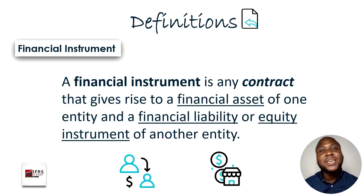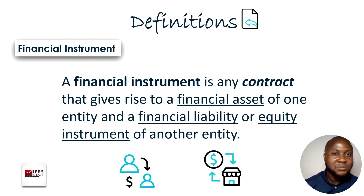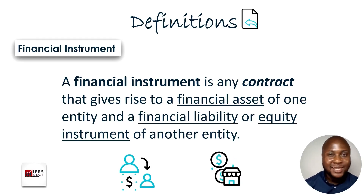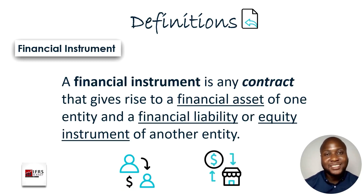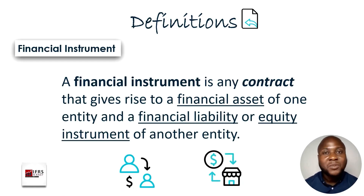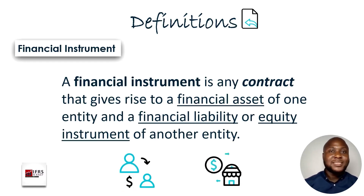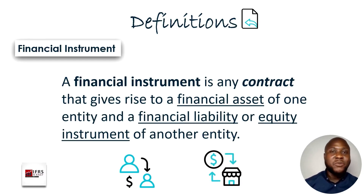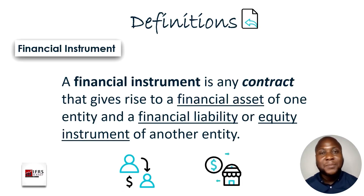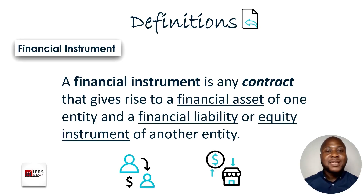When that contract takes place, one entity must have a financial asset, while the other entity in that same contract will have either a financial liability or equity — and sometimes both. The major point is that a contract involving a financial instrument requires at least two parties: one party will have a financial asset, while the other party will have a financial liability or equity.